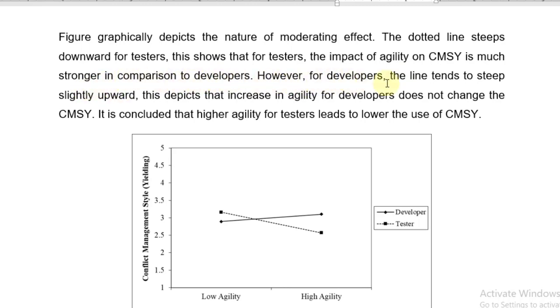However, for developers, the line tend to steep slightly upward. You can see this continuous line. This depicts that increase in agility for developer does not change the CMSY significantly. It is concluded that higher agility for the tester lead to lower the use of CMSY.